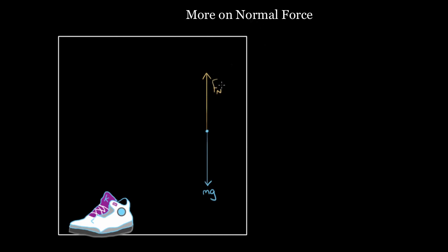If the shoe is not in contact with a surface, you don't have a normal force. It's not until the shoe makes it to the ground or touches another surface that you'll have a normal force. So if we let the shoe rest on the ground, now you'll have a normal force pointing up. And here's another misconception: people think the normal force is always equal to mg. Because it's equal to mg in so many different scenarios, people just automatically replace it with mg.